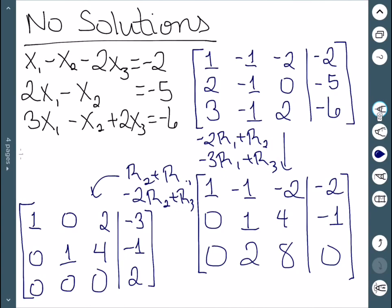So now we can already see that we have issues. In particular, the next step would be to get a 1 in the third row, third column. However, that's impossible. If we just look at the coefficient matrix part, we have a row of zeros. And so this is our indication that we have no solution.